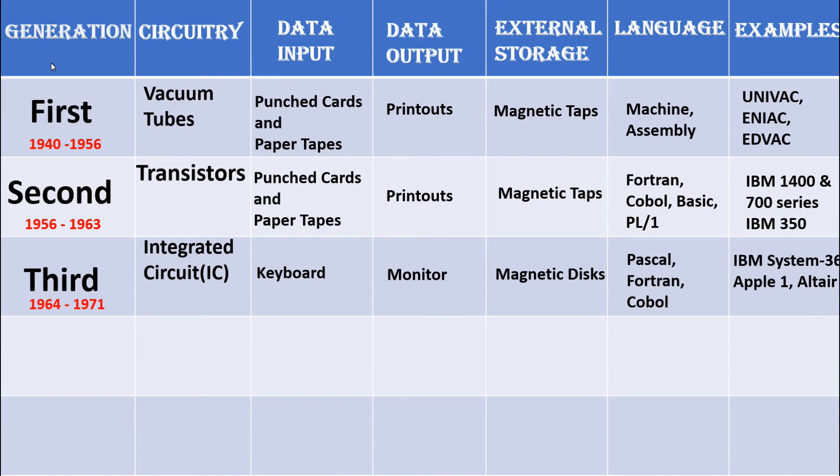In the fourth generation of computers from 1972, they used microprocessors. For data input, they used keyboard, mouse, scanner, etc.